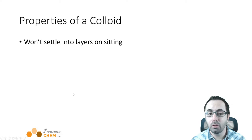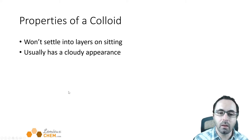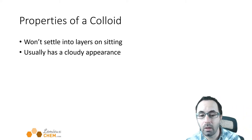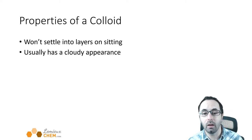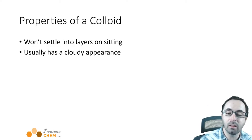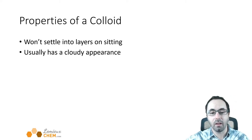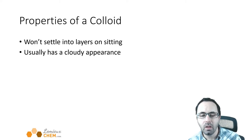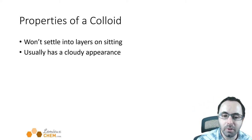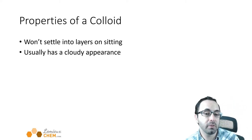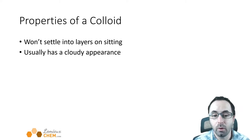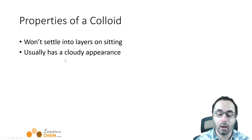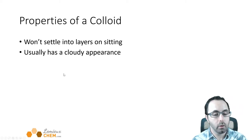You'll recognize a colloid because they're not going to settle into layers upon sitting, but they will appear cloudy. Think of milk — milk is a colloid. It appears cloudy, but unlike some mixtures that separate, homogenized milk from the store won't settle into layers. Raw milk straight from the cow would actually separate into a layer of fat on top and more watery milk on the bottom. That would actually be a suspension. The homogenized milk you drink is a colloid — it doesn't settle into layers, but it does have a cloudy appearance, unlike solutions which appear relatively transparent.